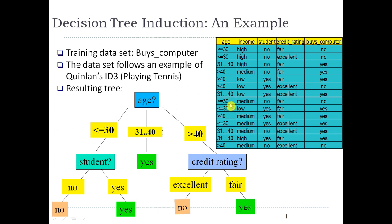If less than or equal to 30 and the student is yes, then Buys_computer is also yes. If the age is greater than 40, then we check the credit rating. If the credit rating is fair, then Buys_computer label is yes.